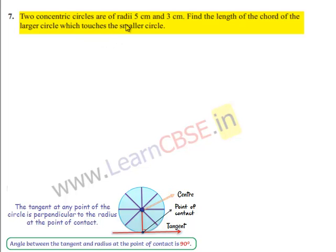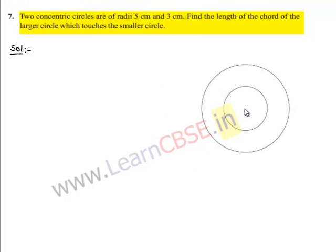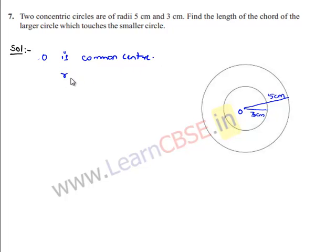Moving on to the seventh question: two concentric circles of radii 5 cm and 3 cm. Find the length of the chord of the larger circle which touches the smaller circle. Let the two concentric circles have center O, with the smaller circle having radius 3 cm and the larger circle having radius 5 cm.